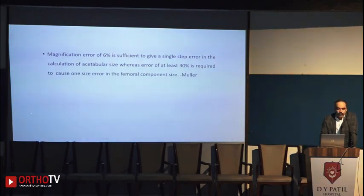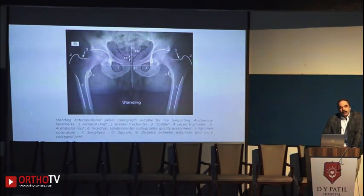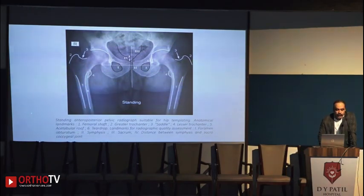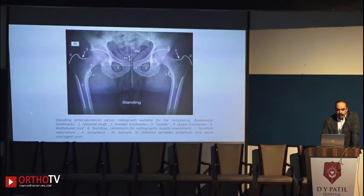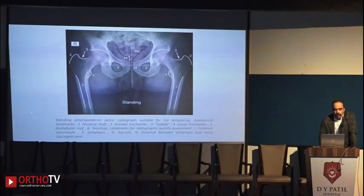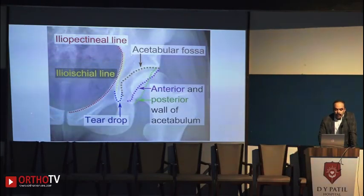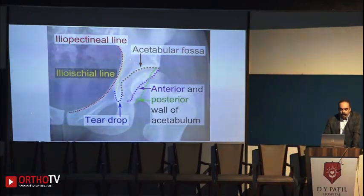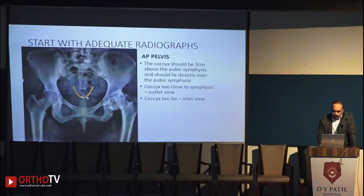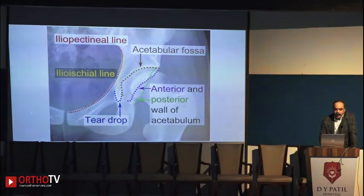What are the things we see on a normal X-ray? On the femoral side: the diameter of the femoral canal, the greater trochanter, the saddle (the area between the greater trochanter and neck), the lesser trochanter, the acetabular roof, and the teardrop. On the pelvic side: both obturator foramina, the pubic symphysis, the sacrum, the coccyx, Kohler's line (the ilio-ischial line), the acetabular fossa, and the anterior and posterior wall of the acetabulum.